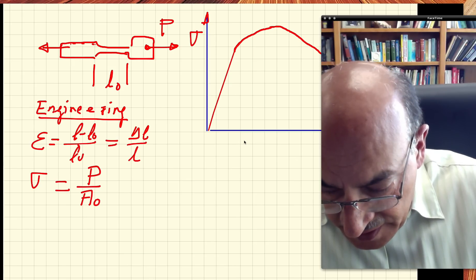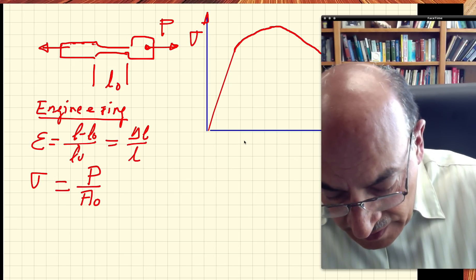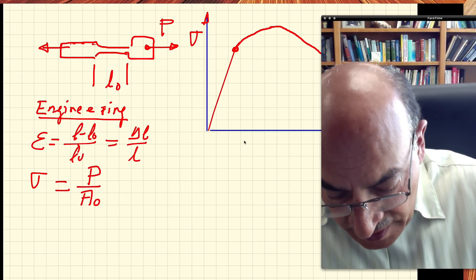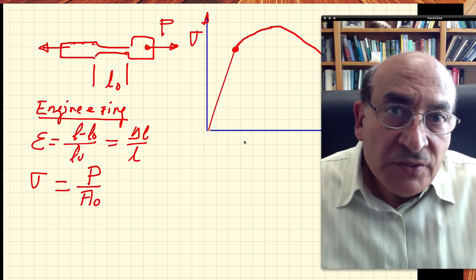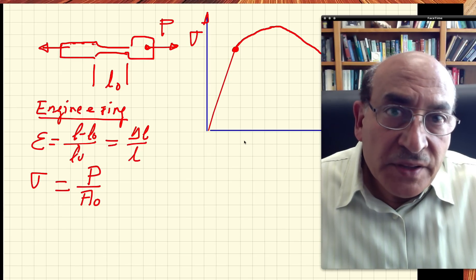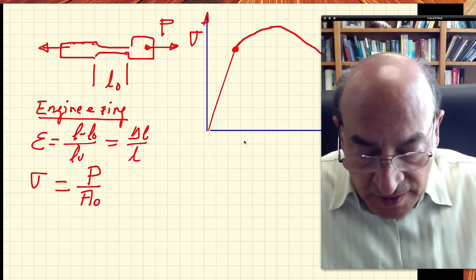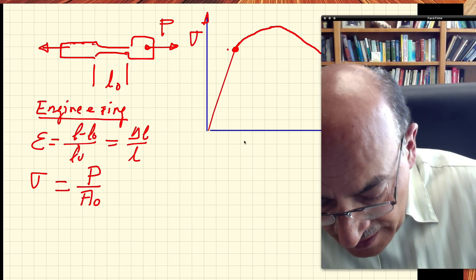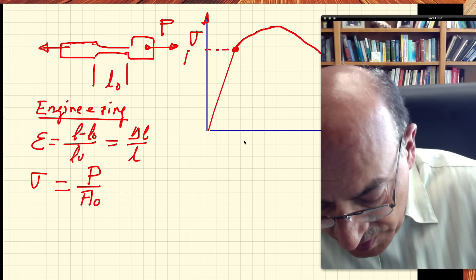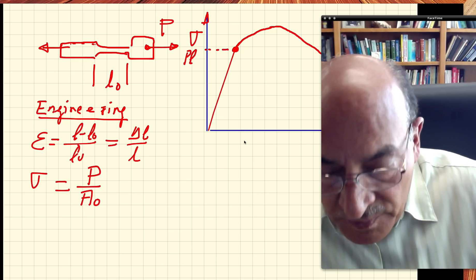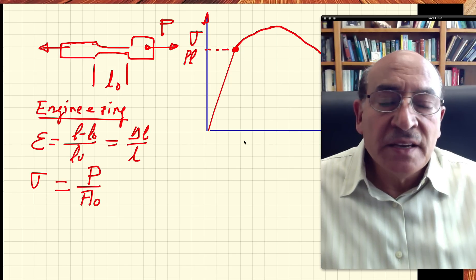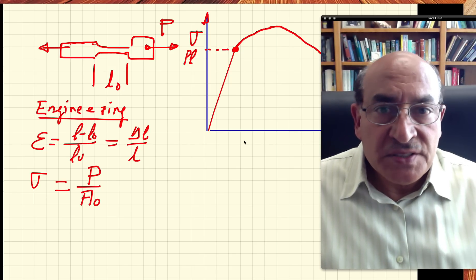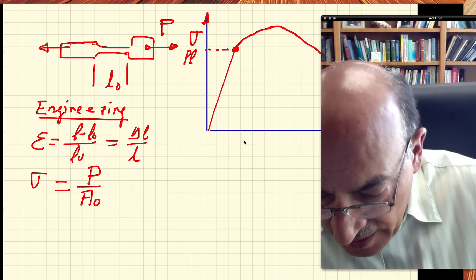Before we get to the yield point, there is a point at which deviations from linearity begin. We call this the proportional limit (PL). Beyond this point, there is no longer proportionality between stress and strain.